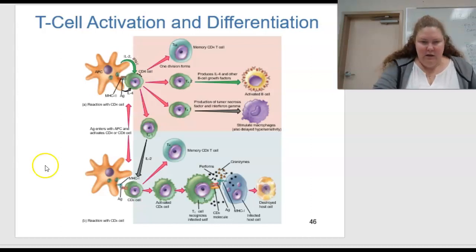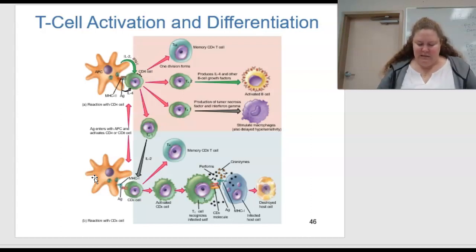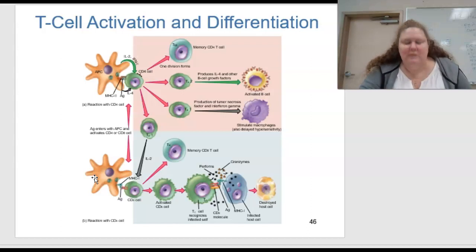Upon binding of the antigen MHC1 complex, CD8 cells become cytotoxic cells, which bind infected host cells displaying antigen or MHC1 complexes and release perforins and granzymes. These lead to apoptosis — programmed cell death — of the infected cells.